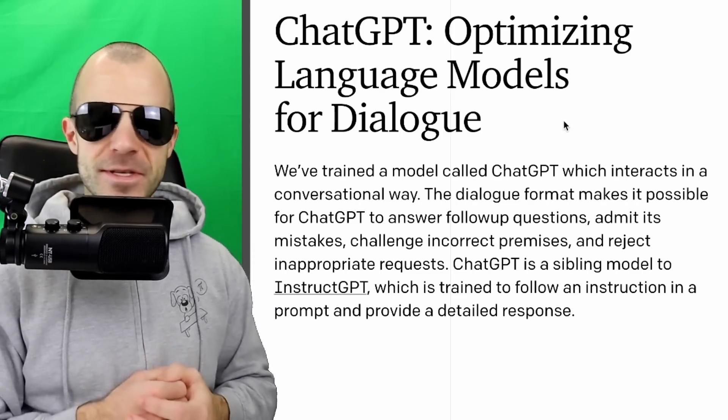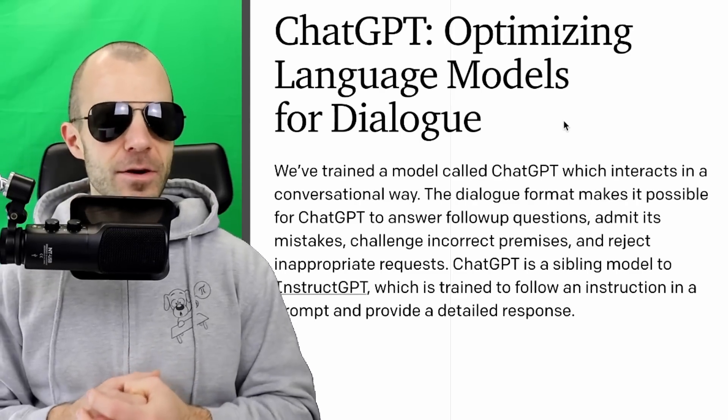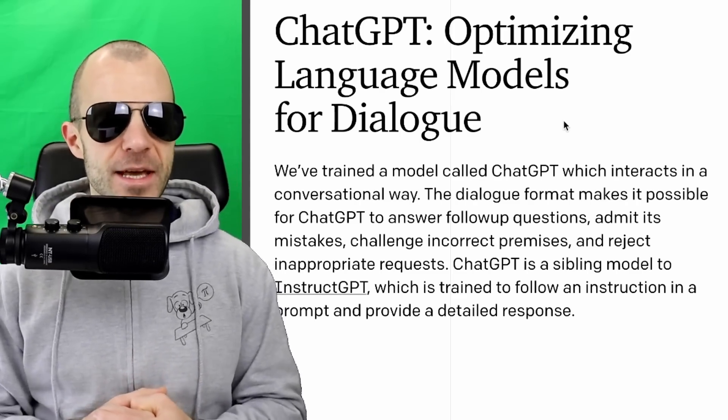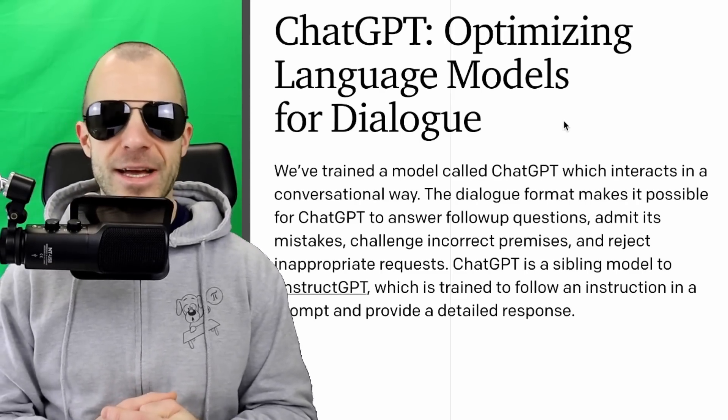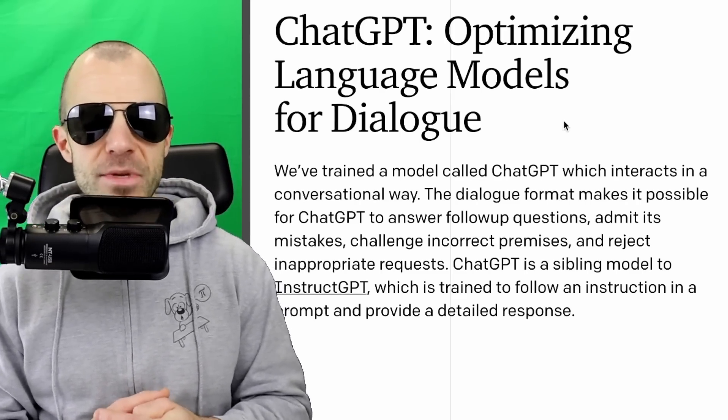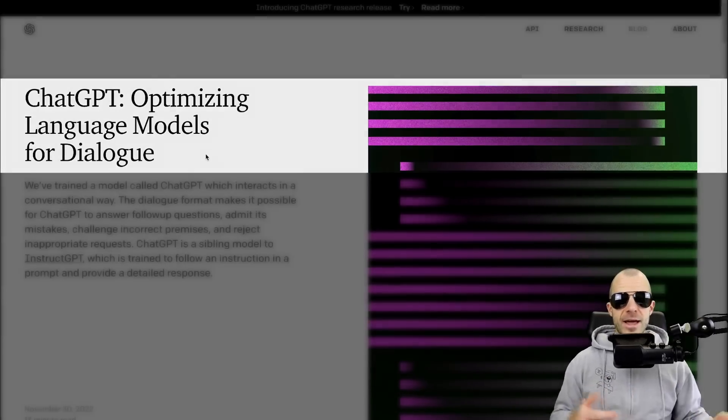ChatGPT is a really awkward word to say because I want to start with a G, like "Jat GPT." Can't they just call it something easy like Alan? Alright, so there's a blog post by OpenAI called "ChatGPT: Optimizing Language Models for Dialogue."